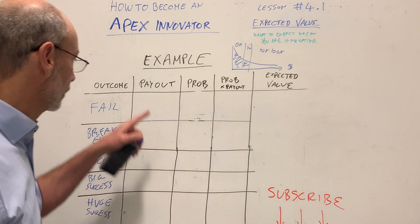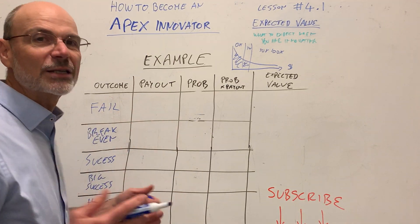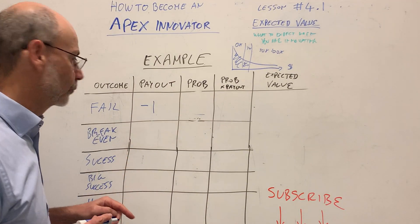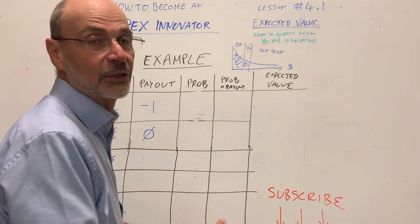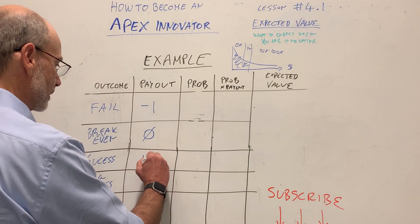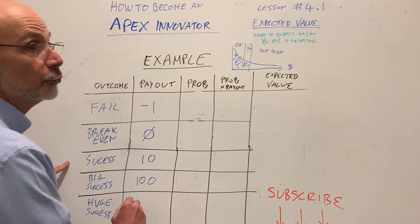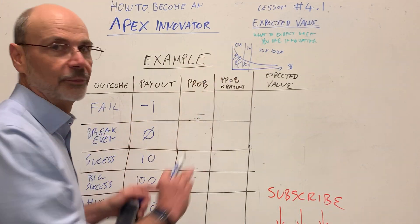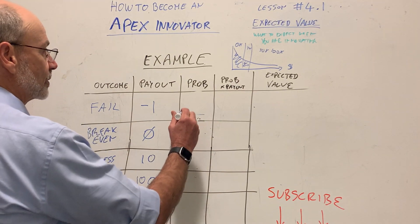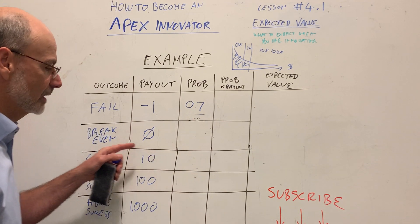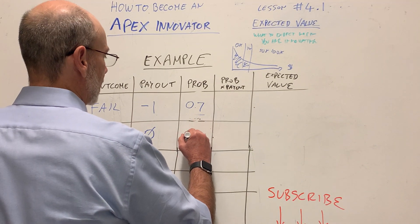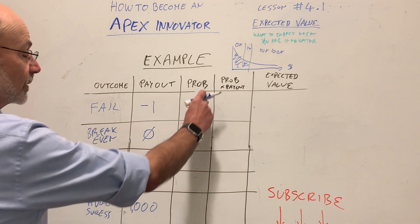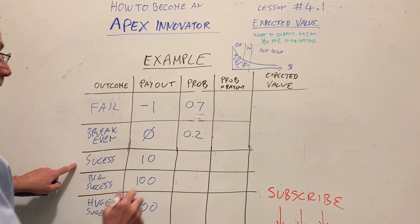Let's add actual numbers — remember, say it with numbers. We'll assume you invest one million dollars in each innovation to keep it simple. If you fail, you're out one million dollars. If you break even, you invest a million and make a million — net zero. Success means you get ten million dollars. Big success means one hundred million dollars. And huge success means one billion dollars. Now for the probabilities: a 70% chance of failure (0.7), and about a 20% chance of breaking even (0.2) — so we're already at 90%.